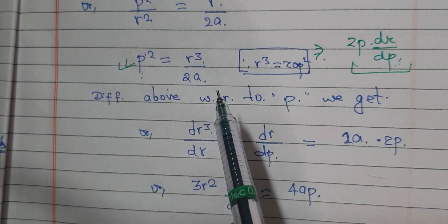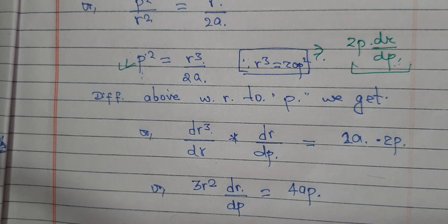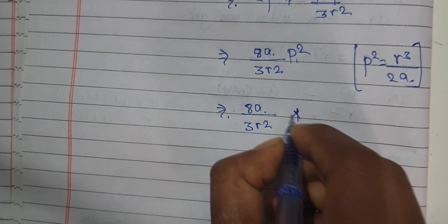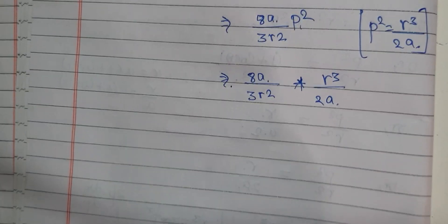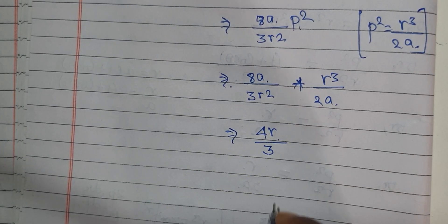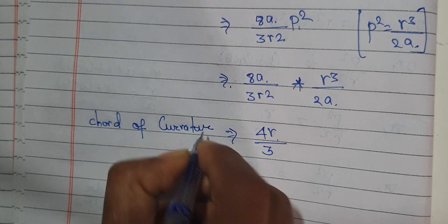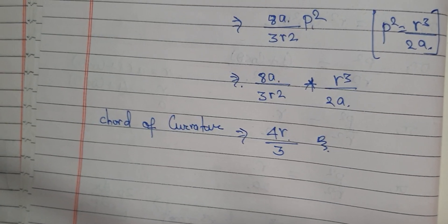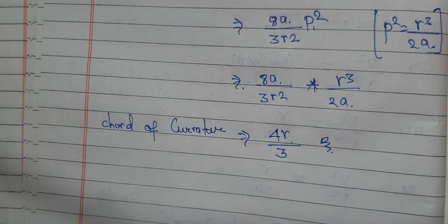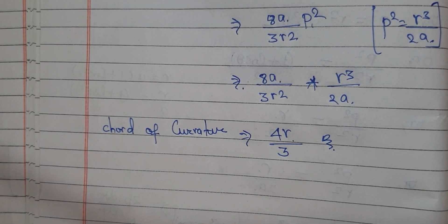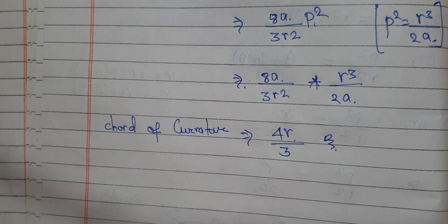So the code of curvature equals 4r/3. That is our answer. The formula has been applied step by step. Thank you for watching the video. Please like and subscribe.